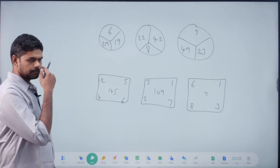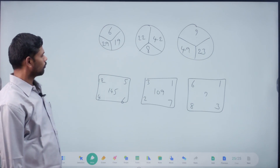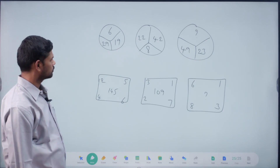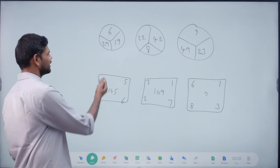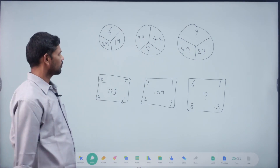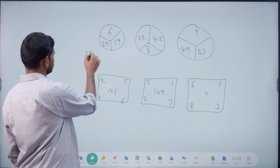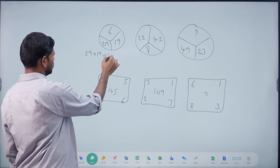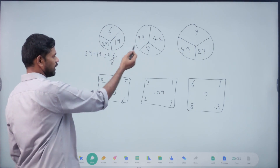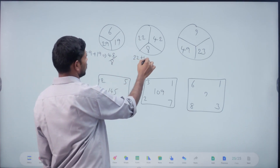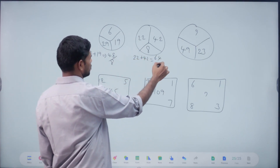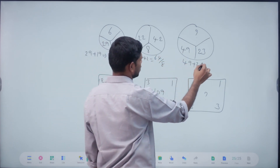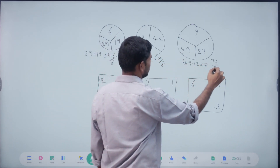Right, answer? 42 plus 22 = 64. Okay. 80 plus 1, 8 square. Okay. Here: 29 plus 19 = 48. Yes, by 8. Right, here too. 22 plus 42 = 64, by 8. 8. Right, here. 49 plus 23 = 72, by 8.